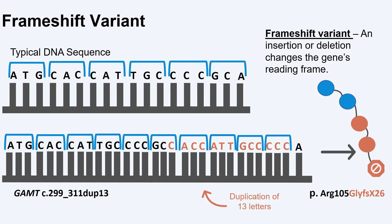When the number of letters inserted, duplicated, or deleted is not a multiple of three, the reading frame shifts for all of the DNA letters after the addition or deletion. Because the reading frame shifts, this is called a frame shift variant. The example here shows a duplication of 13 letters of DNA. As you can see, this shifts the reading frame, which changes the amino acids and creates an early stop codon, leading to a shortened protein.